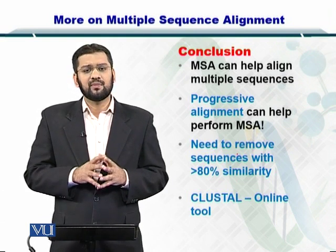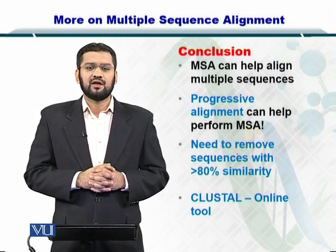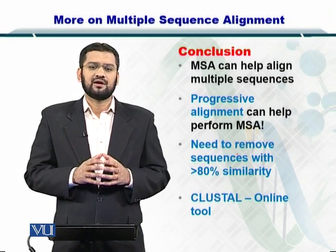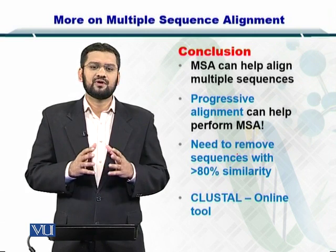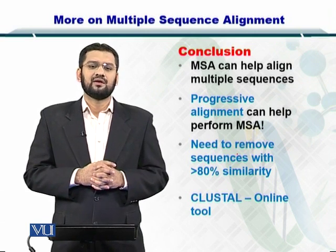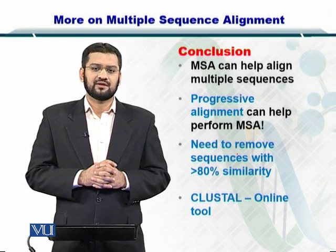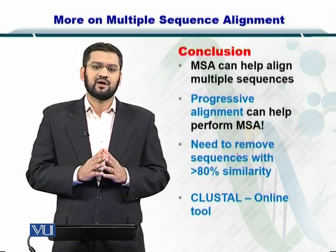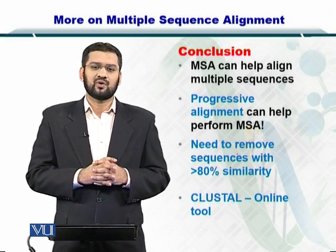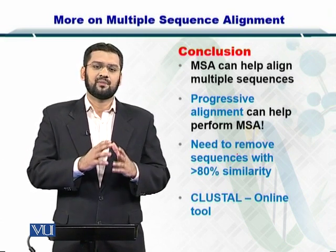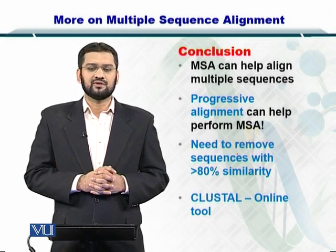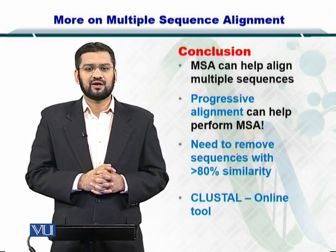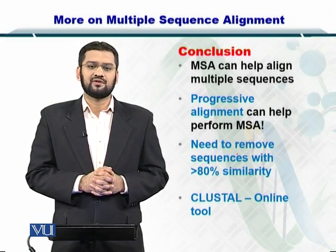An important thing to remember is that you should only consider sequences that are divergent or different from each other by less than 80%. If two sequences are more than 80% similar, you don't want to include both, as this will create a bias. Lastly, ClustalW is an online software tool that can help you perform multiple sequence alignment.